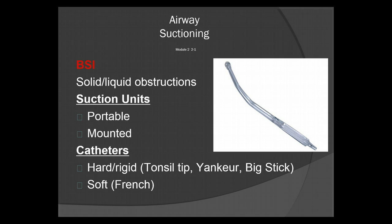Portable units are usually battery operated. Your mounted units will be on board in your ambulance. You'll have two types of catheters: the hard rigid or tonsil tip, Yankauer, or big stick, which is shown here in the picture. Or you could have your soft catheters, which are your French catheters.